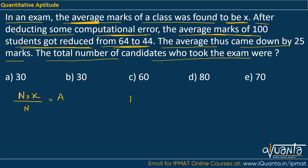The average marks of 100 students got reduced from 64 to 44. That means this is a reduction of 20 marks per student. So the total reduction will be 100 into 20, which equals 2000. And this reduction is from total marks. Total marks earlier was n into x. So nx minus 2000 is the total reduction. But still the number of students is the same, so we divide this by n. This will be the new average, and this average has come down by 25 from the average earlier.